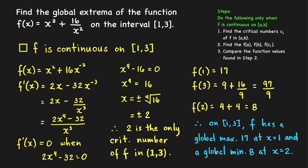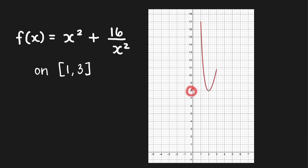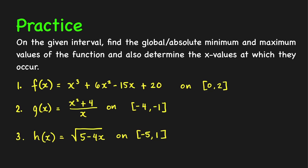Looking at the graph of the function on [1, 3], we can clearly see a global minimum of 8 at x = 2 and a global maximum of 17 at x = 1, confirming our solution is correct. Finally, here are some practice problems: use the closed interval method to find the global extrema of the given functions on their specified intervals. If you'd like me to check your answers, write them in the comment section below.